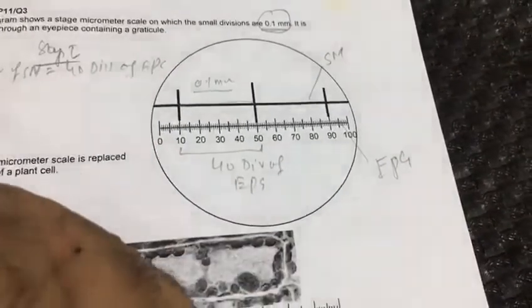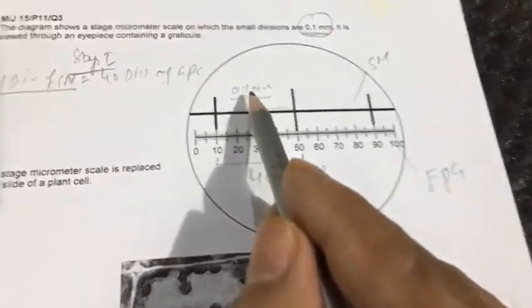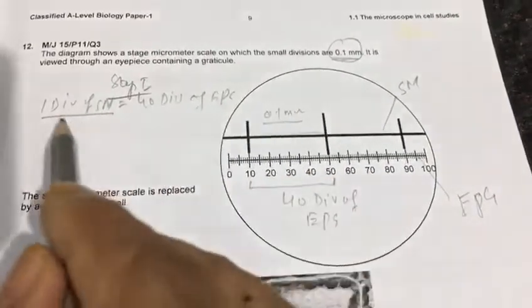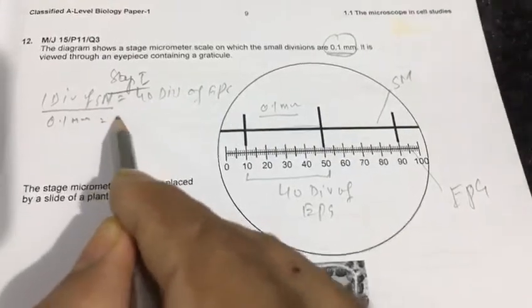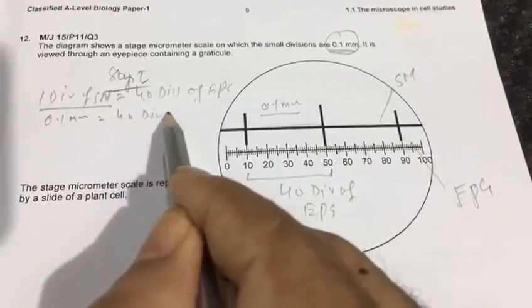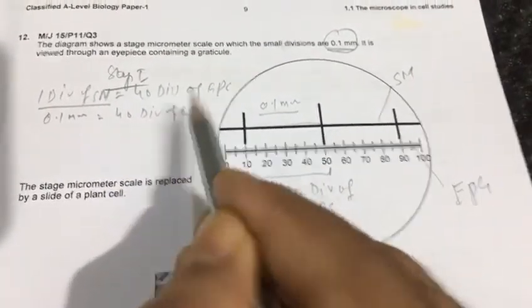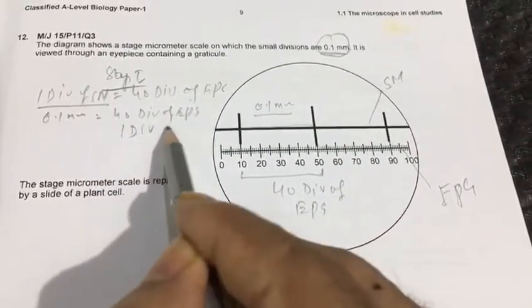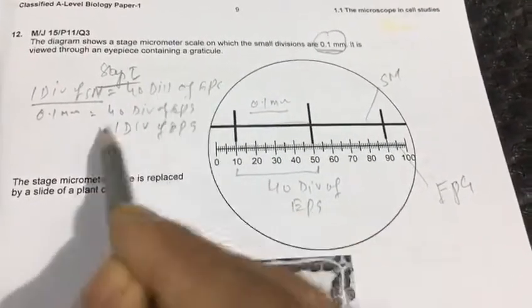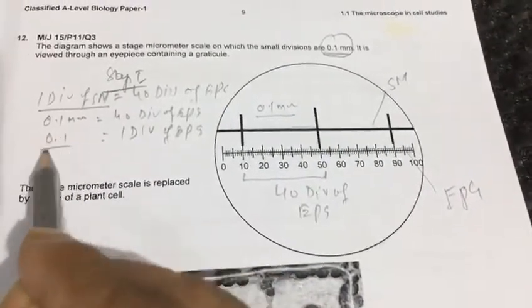We already know 1 division of SM is equal to 0.1 mm. So 0.1 mm is equal to 40 divisions of EPG. Therefore, 1 division of EPG would be equal to 0.1 divided by 40.